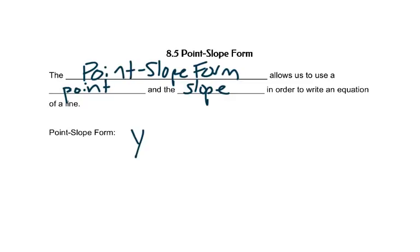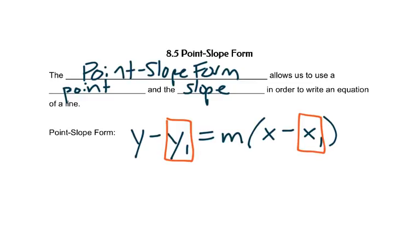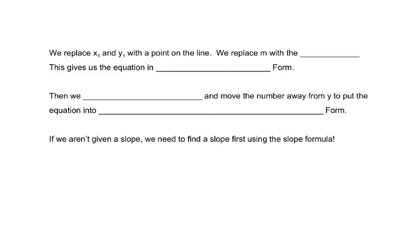The point-slope form says y minus y₁ equals m times x minus x₁. We will replace the y₁ and the x₁ and the slope. We replace x₁ and y₁ with a point on the line. We replace m with the slope. This gives us an equation in point-slope form.